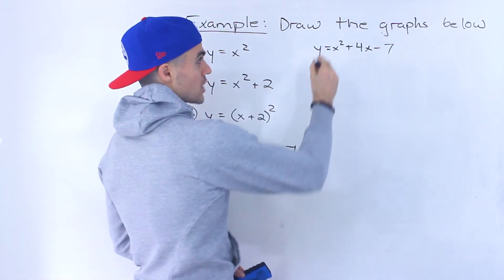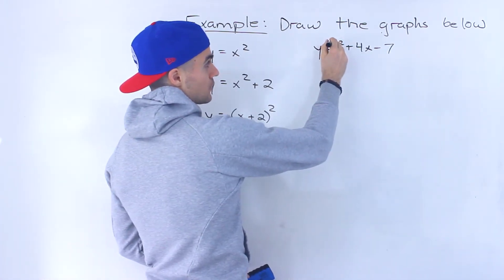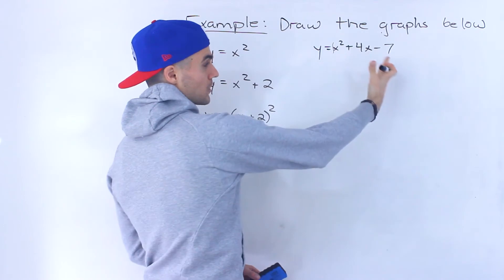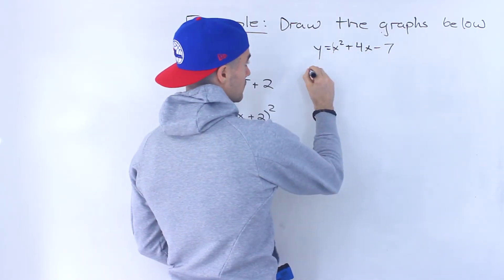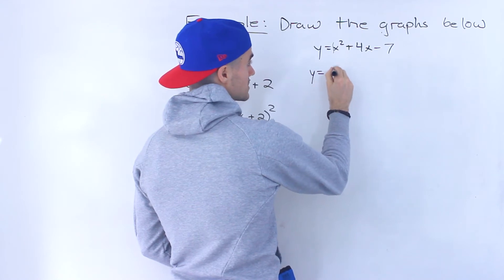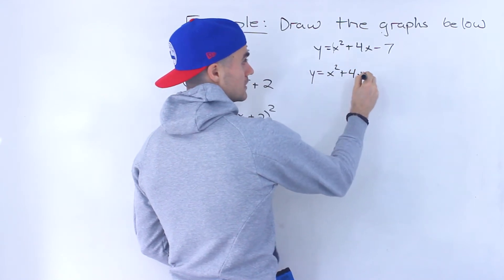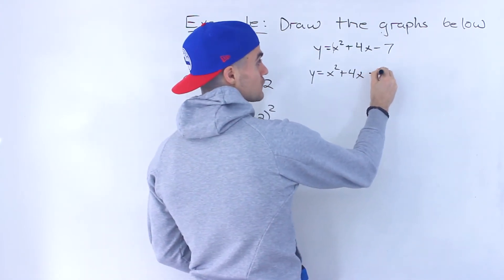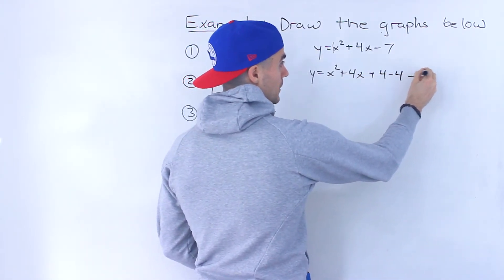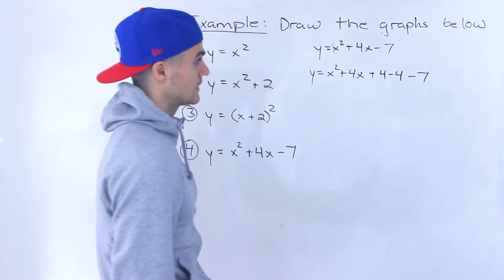Now, first thing you always want to check is, is that x squared by itself? And notice that it is. There's only a one in front, so we don't have to factor anything out first. So we could just complete the square from here. So we'd have y equals x squared plus four x. When we did the b over two squared, we got four. So we do plus four minus four.